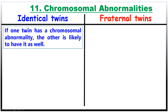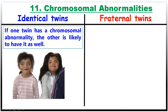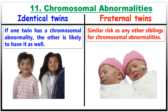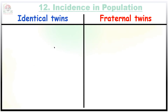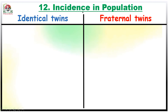Regarding the chances of developing chromosomal abnormalities, this is a minus point for identical twins: if one twin has a chromosomal abnormality, the other is likely to have it as well. In contrast, fraternal twin siblings may or may not be affected by the same chromosomal abnormality.